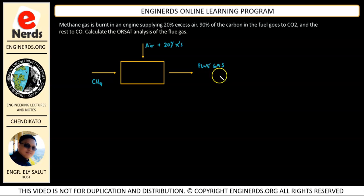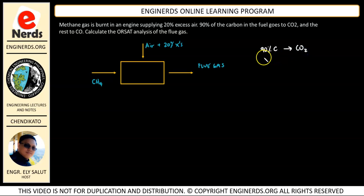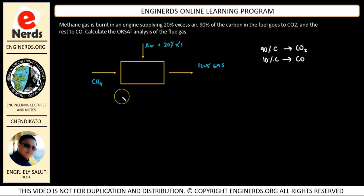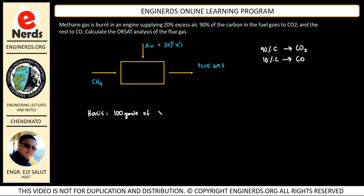We need to take note that 90% of our carbon has been burned to CO2 and the rest, which is 10% of the carbon, has been burned to CO. In order to solve this problem we need to set a basis, so let's say our basis is 100 gram mole of our fuel, which is CH4.